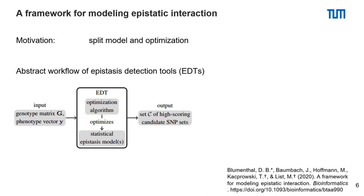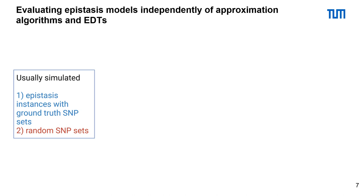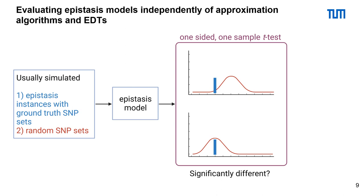As a next step, our main idea is to split the optimization algorithm from the statistical epistasis model to evaluate only the model. As an input, we use epistasis instances with a ground truth SNP set. As a second input, our protocol requires random SNP sets. Then, we use the epistasis model to calculate scores. Afterwards, we perform a one-sided, one-sample t-test. As an output, we get a p-value for the epistasis model.